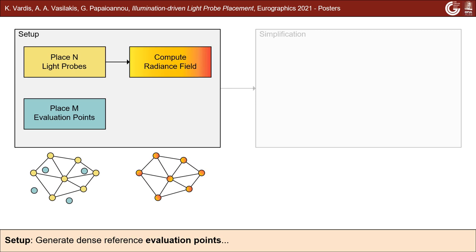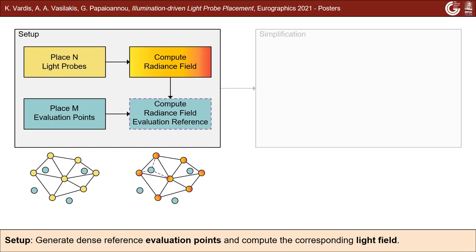Next, a number of evaluation points is also placed in the scene to sample the cast light field. Finally, the incident energy for each evaluation point is computed by sampling its nearest probes and then it is stored as a reference to guide the next step.